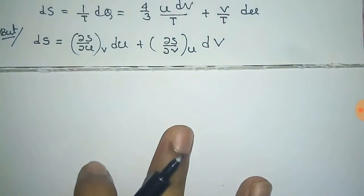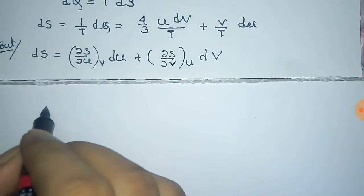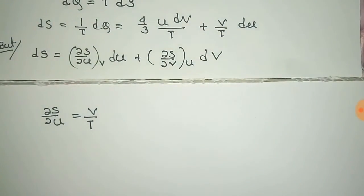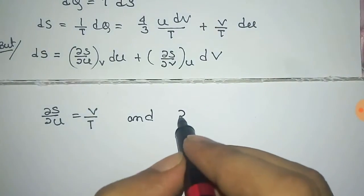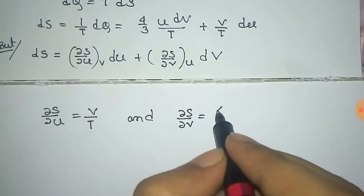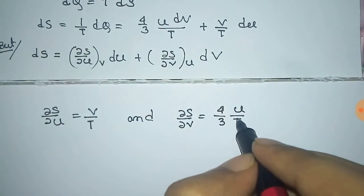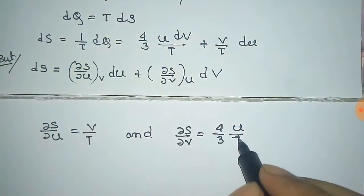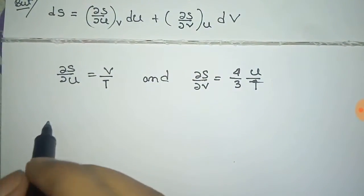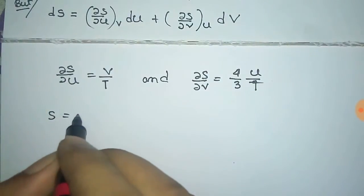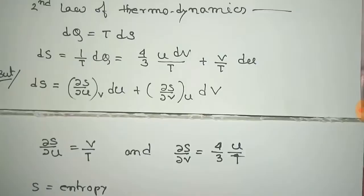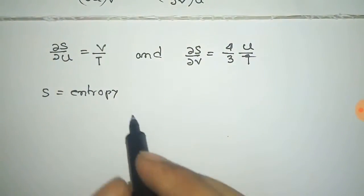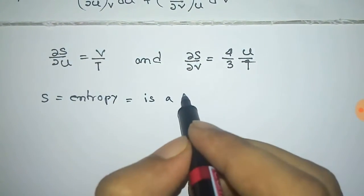Comparing these expressions, we can write ∂S/∂u = V/T and ∂S/∂V = 4/3 u/T. Here S is the entropy of the system. Since entropy is a state function...